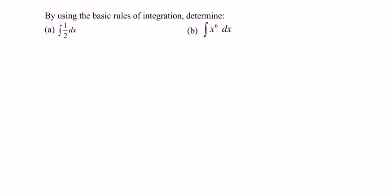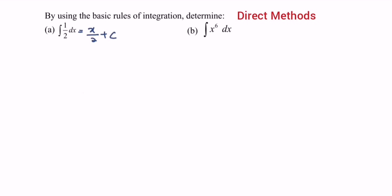Here we have examples using the basic rules of integration. For part A, integrate one over two with respect to x. We have a constant, so the result is x over two plus c.